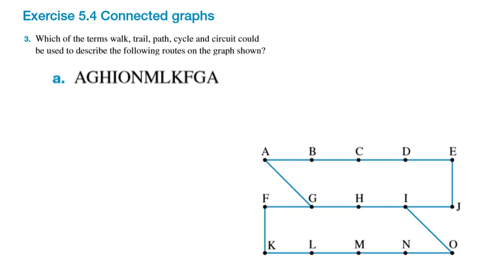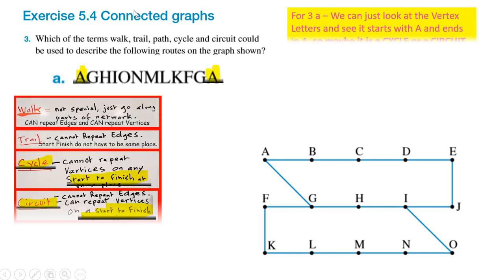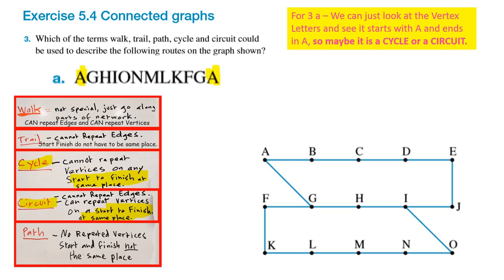Question three has four parts. Here's three A: we're going A, G, H, I, O, N... So we'll trace it around. First step — check if it starts at A and ends at A. It does start at A and end at A, so maybe it's a cycle or a circuit — possible answers — because they start and finish at the same place.